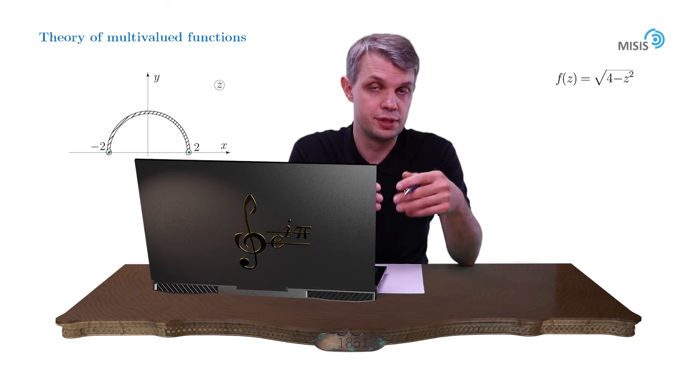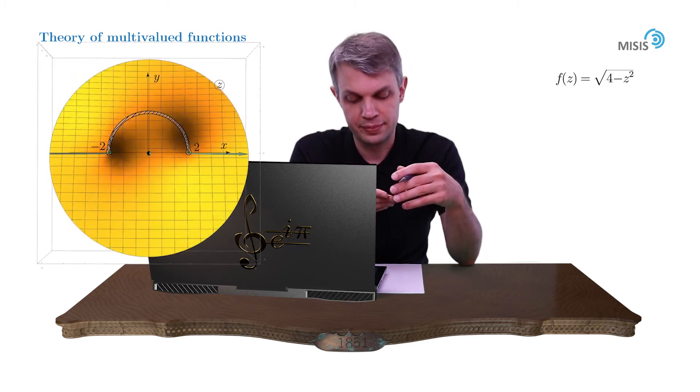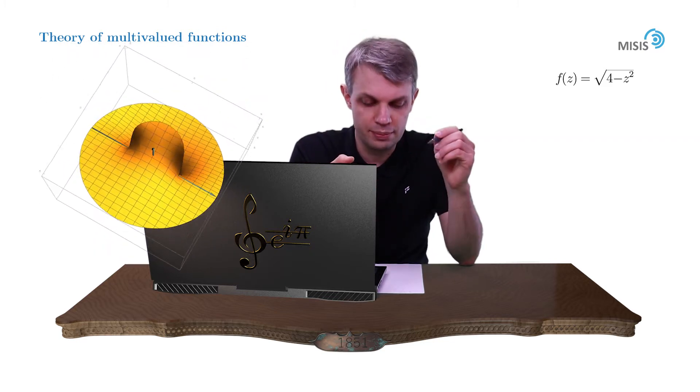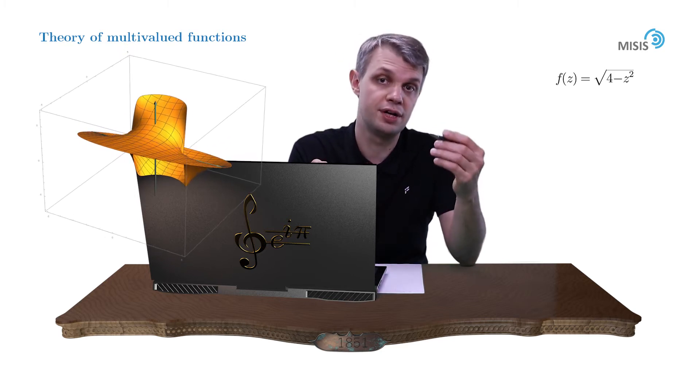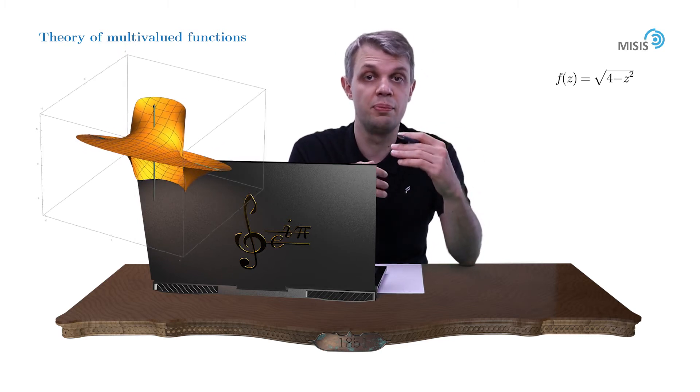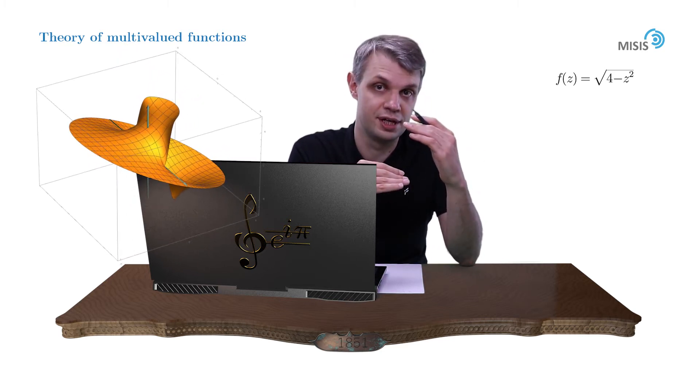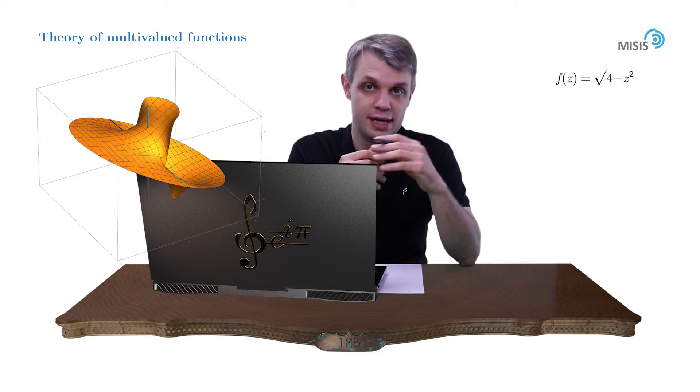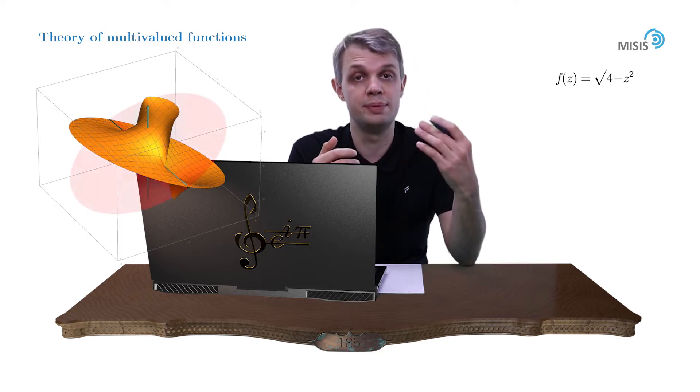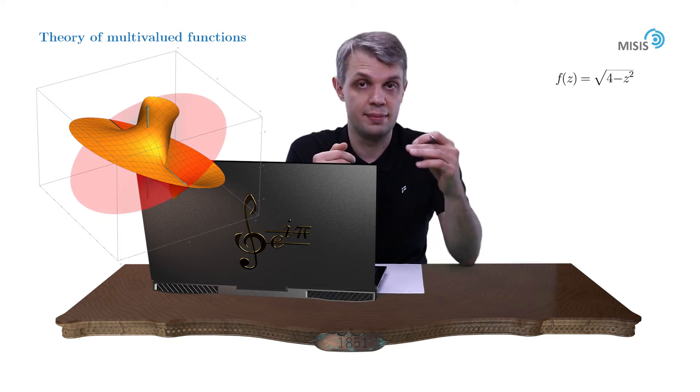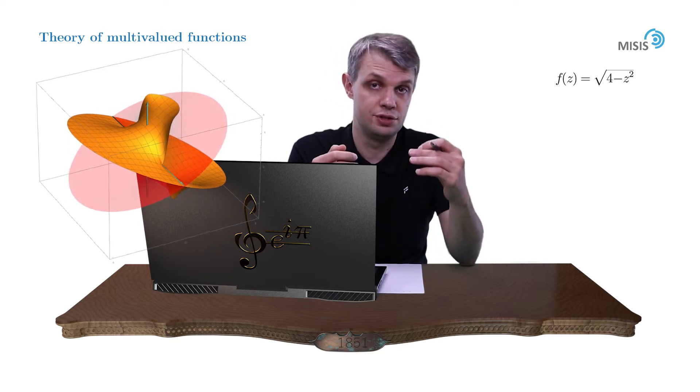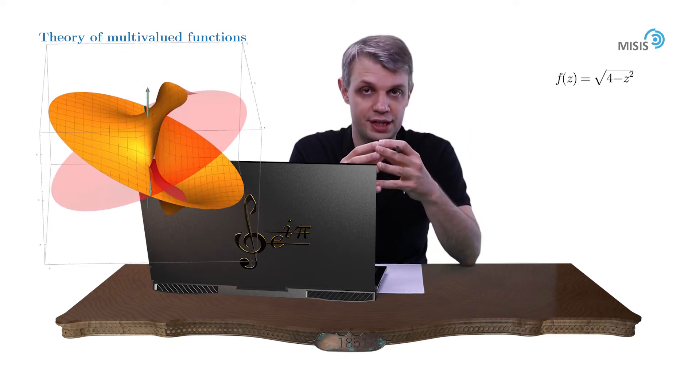So our plan is as follows. We will draw an inclined disk and cut it with a knife along the branch cut. And since our function is gapped at the branch cut, we will bend different banks of the branch cut in opposite directions, upwards and downwards. Then we will draw a second Riemann sheet with opposite inclination and make the same cut. And finally we will glue two sheets along this branch cut.